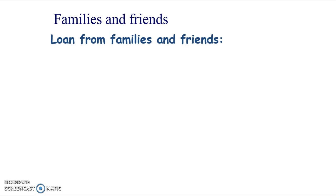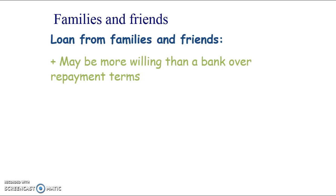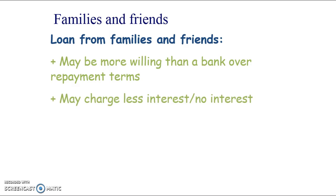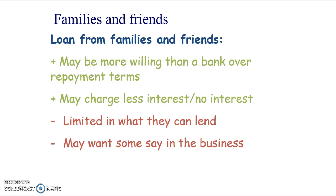Another option is borrowing from friends and family. They might be more understanding than a bank — for example, if you have a really poor month in terms of sales figures, they might be more willing to let you have a month off repayments, or be more generous with the amount of time you're allowed to borrow over. They may charge less interest or even no interest at all. However, they're limited in the amount they can lend, and mixing family and work can get very complicated and lead to falling outs.